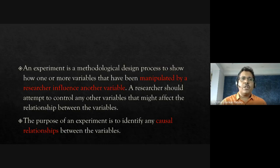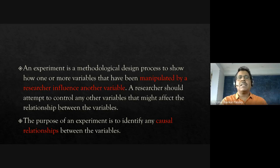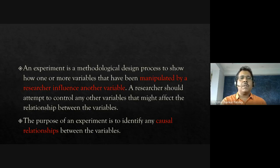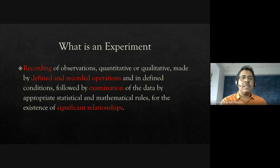An experiment in social science is a methodological design that shows how one or more variables manipulated by a researcher influence another variable — in other words, how an independent variable causes a change in the dependent variable. The most important purpose of an experiment is to identify causal relationships between variables, which can be established only through experimental methods.